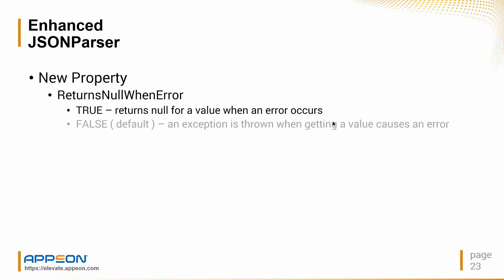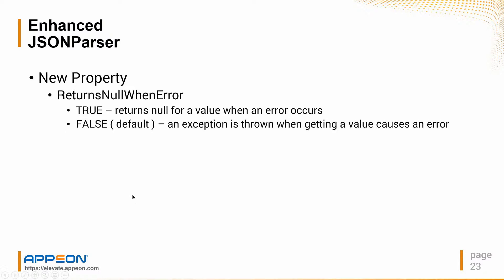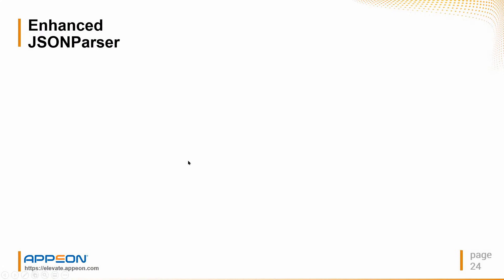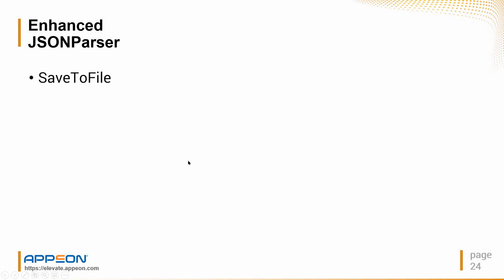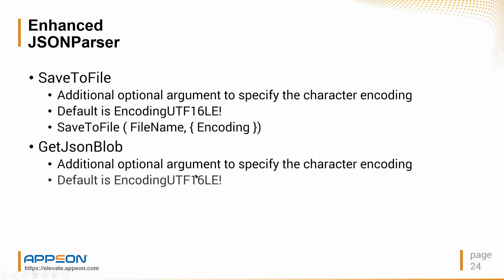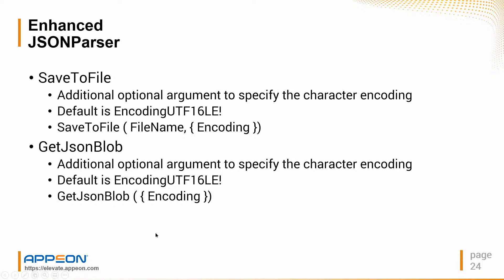There's a new property for the JSON parser. The default is that if you try to access a value not in the JSON, it will throw an exception. You can set it to true, meaning if you try to access an attribute that doesn't exist, it will just return null. The JSON parser also has the new save to file function, very much like the generator.